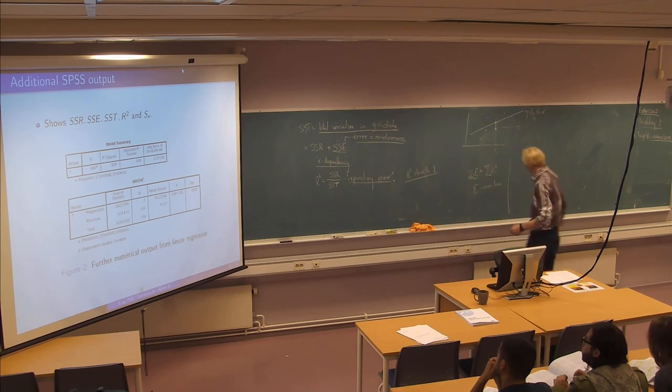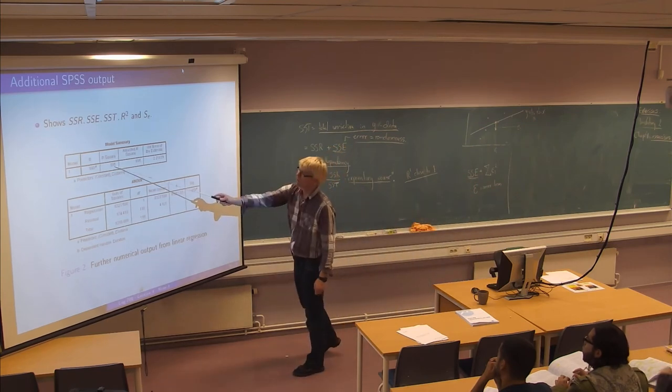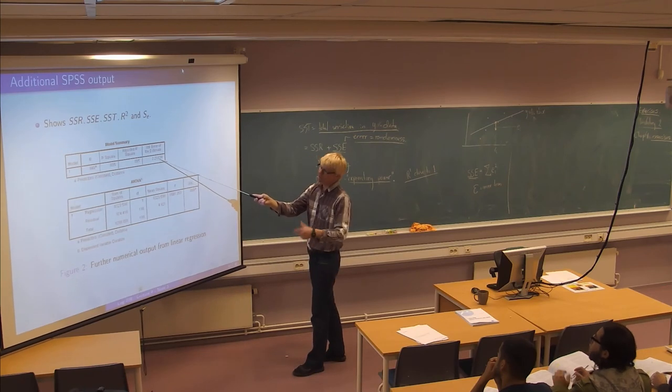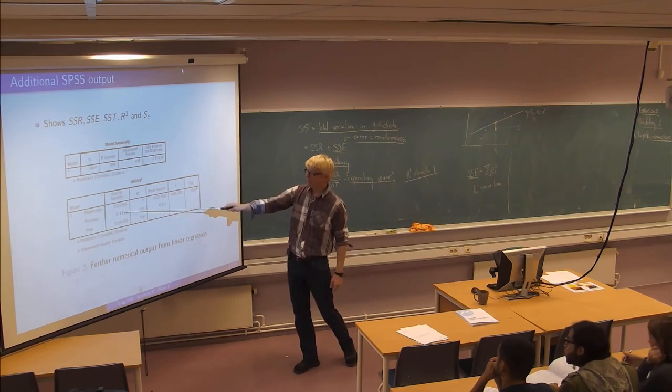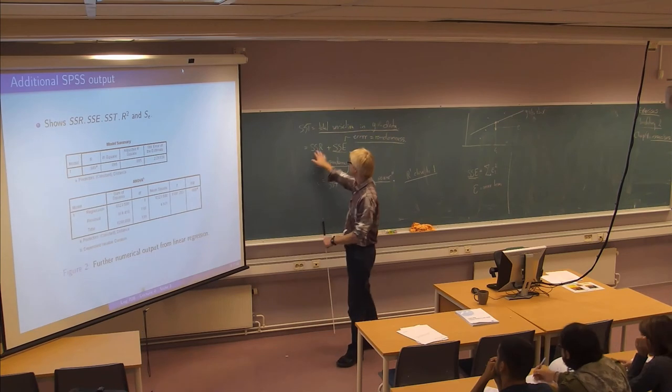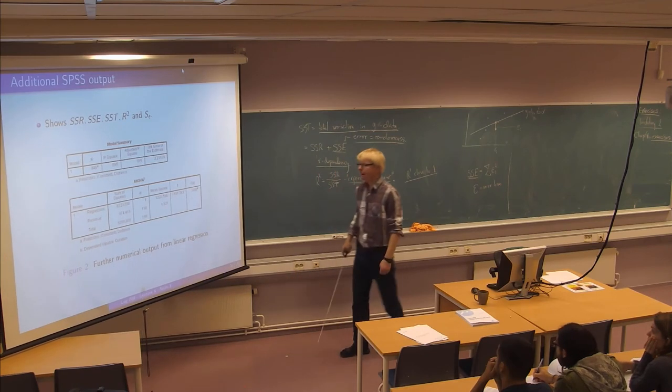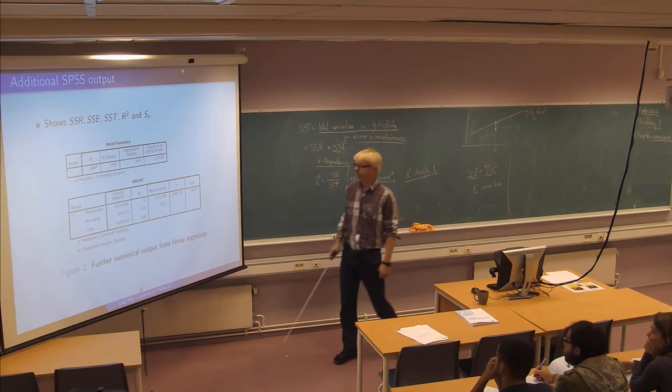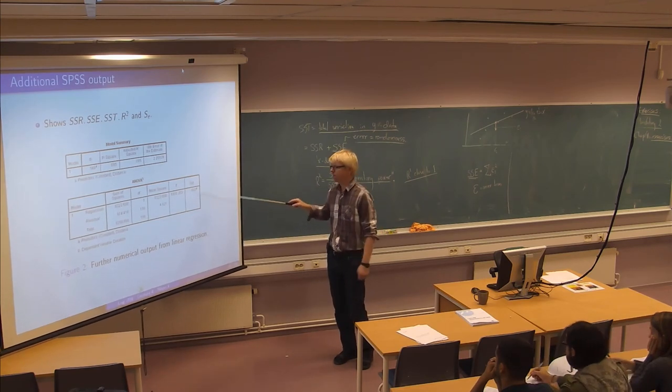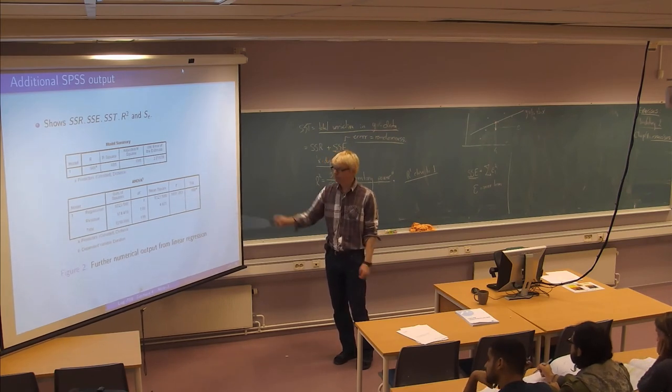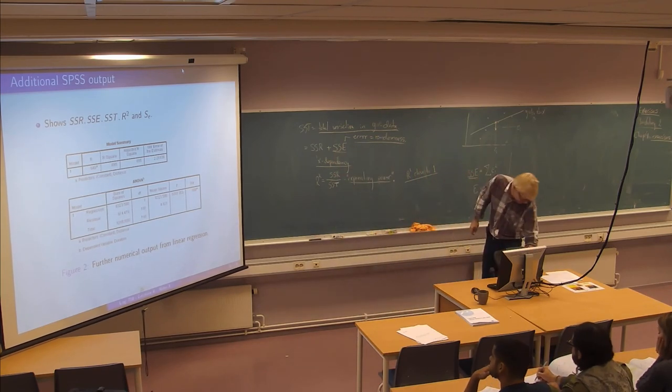So we can compute that using preferably some software. So here is more SPSS output. You see the R square, the SE sits here. It's all explained in Katja's nice PDF description. The total square sum, the SSE and the SSR sums are here. And you can just check that if you take that one and add to this one, you get this one. These numbers out here are not that important to us. We are not going to use them in this course, really.